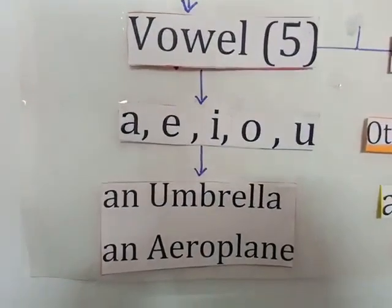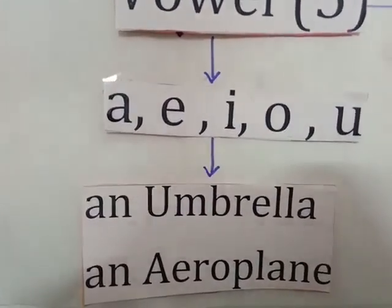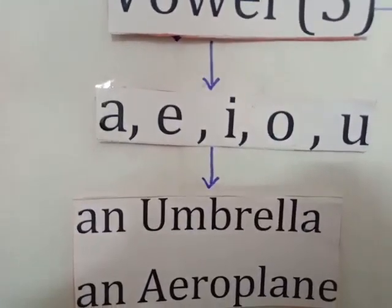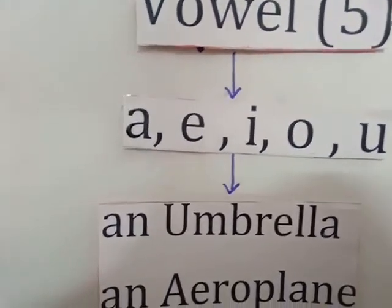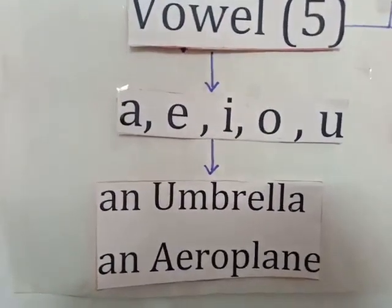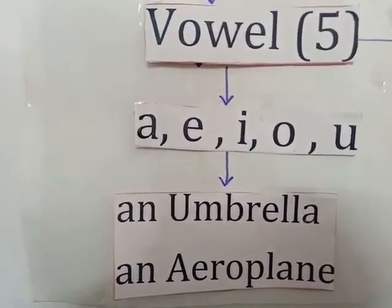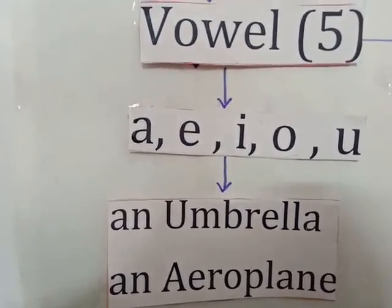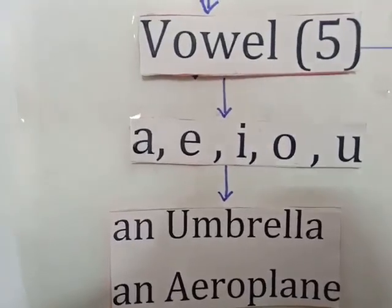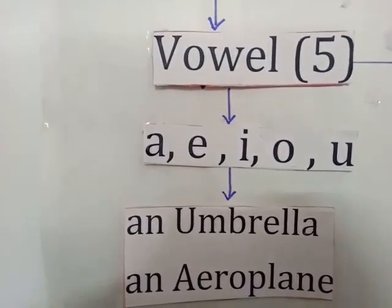For a word starting with a vowel we use AN. For example, umbrella starts with U, which is a vowel, so we use AN. Another example — aeroplane starts with A, which is also a vowel, so we use AN. AN is used before a singular noun beginning with a vowel sound.